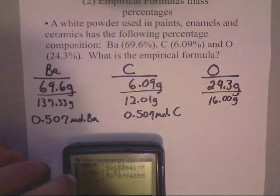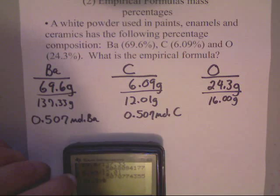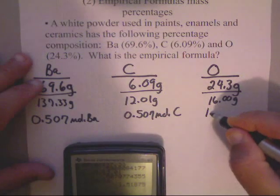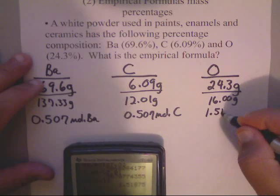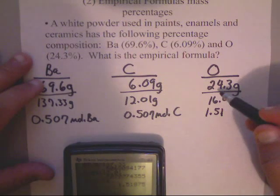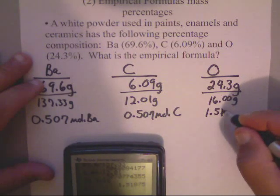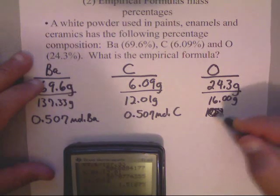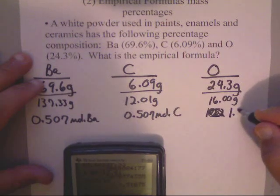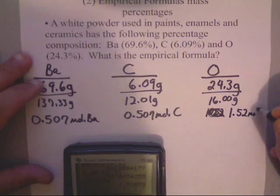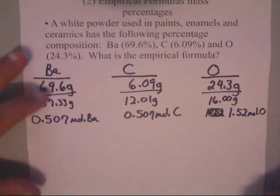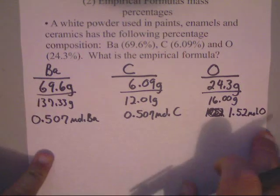Anyway, moving on, we've got 24.3 divided by 16, and you end up getting 1.51, now remember, there's only three sig figs, so this one should change to a 2. So, it should be 1.52, if you can't read my writing, I'll write it again, 1.52 moles of oxygen.